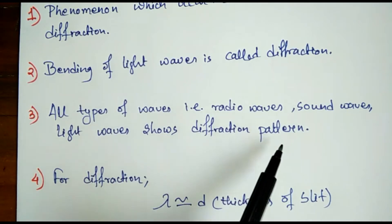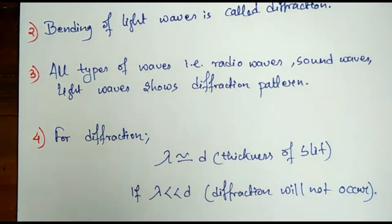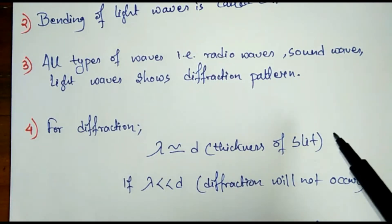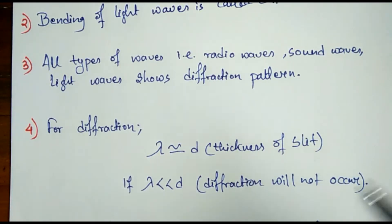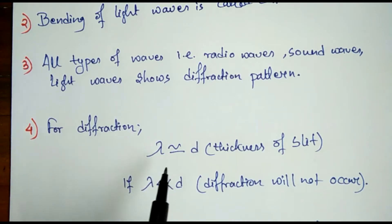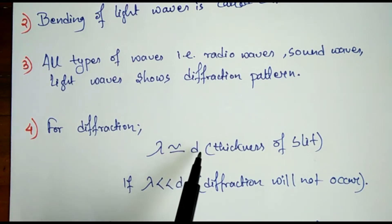A question might arise in your mind: why is diffraction so frequently observed in sound waves, but why is diffraction not observed in light waves in our day-to-day life? The condition for diffraction to occur is that lambda, the wavelength, should be either similar to or equal to d, the thickness of the slit.